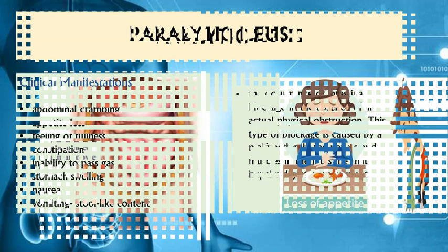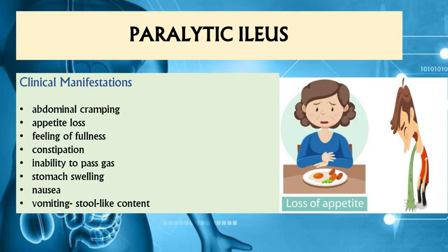Clinical manifestations for paralytic ileus include abdominal cramps, loss of appetite, feeling of fullness, constipation, inability to pass flatus, gastritis, nausea, and vomiting with a stool-like consistency.